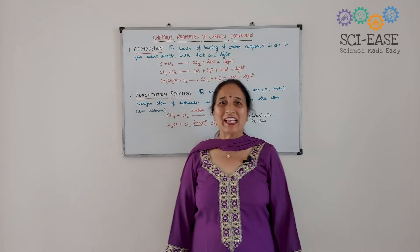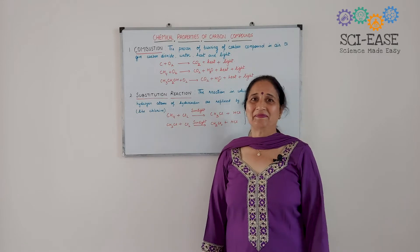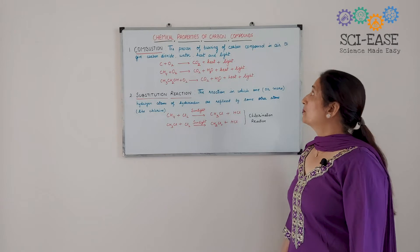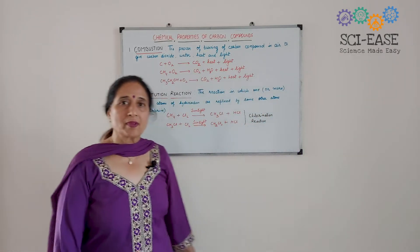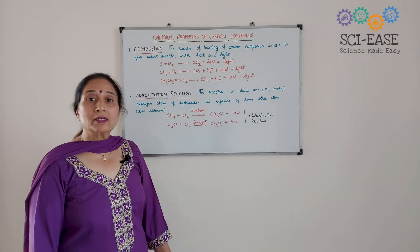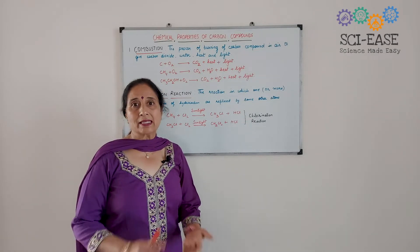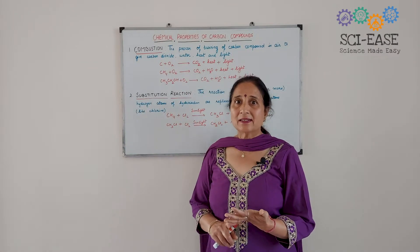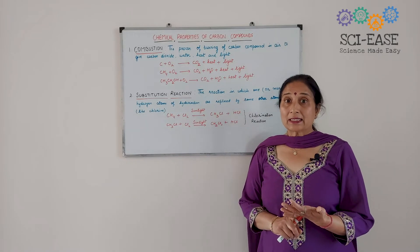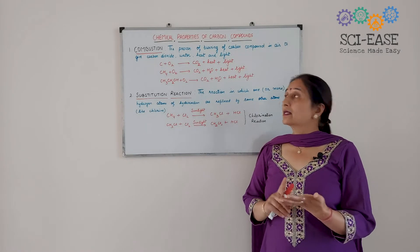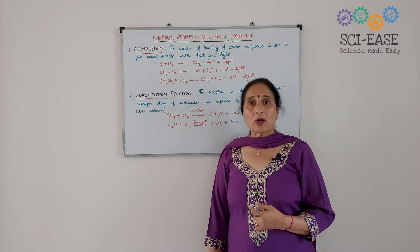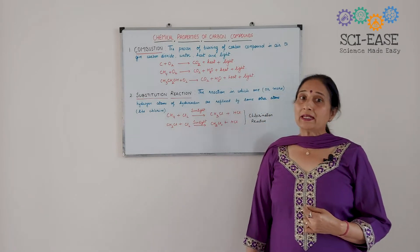Hello everyone. Welcome to SAI-Ease. In this video, I will discuss the chemical properties of carbon compounds. We have read about carbon compounds — alkanes, alkenes and alkynes. The chemical properties we will study are combustion, substitution reaction, oxidation and addition reactions.